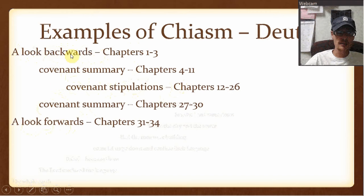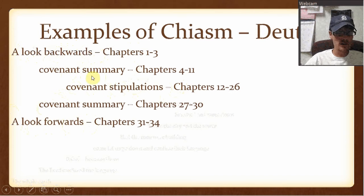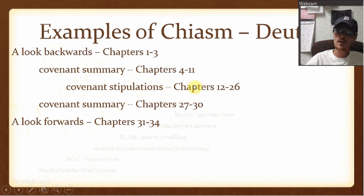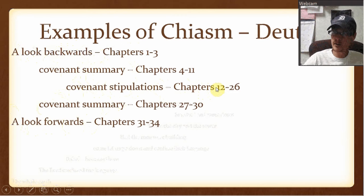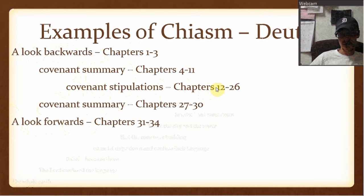These are things that happened in the past. These are things that are happening. This is what's going on with the covenant. But right here are the stipulations. God is saying: I want you to obey me, I want you to listen to my words, I want you to follow what I'm saying. I hope that explains that.